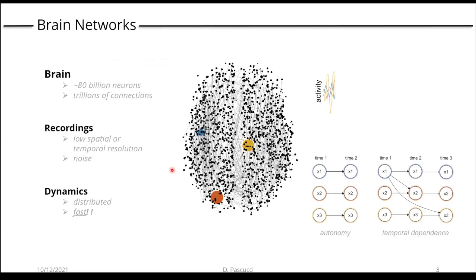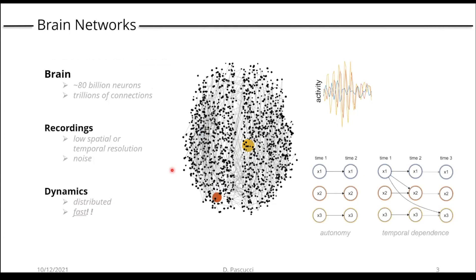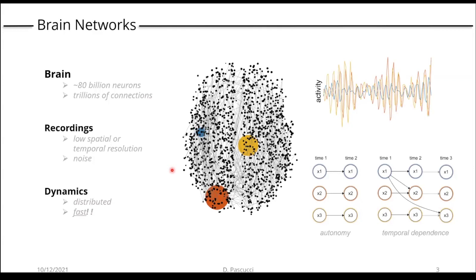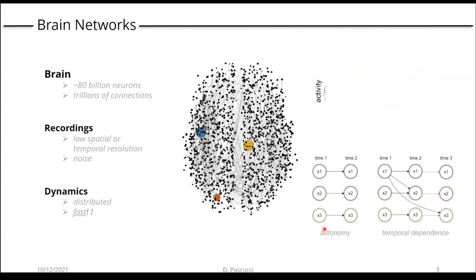The brain is a very complex system with billions of neurons and trillions of connections, and these units interact constantly and directly. We often rely on measurements that suffer from either low spatial or low temporal resolution and are highly affected by noise, with the aim to characterize dynamics in this system that are distributed and very fast. If you take the activity in three regions of the brain, there is a myriad of ways in which this activity can show statistical dependencies in time, from no dependence at all — three completely autonomous signals — to any sort of synchronous and lagged interaction.